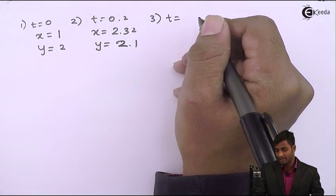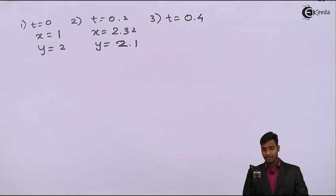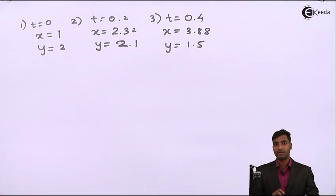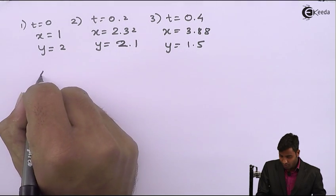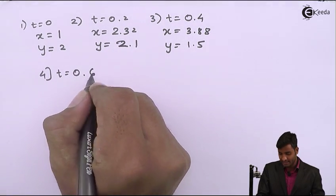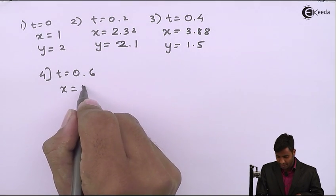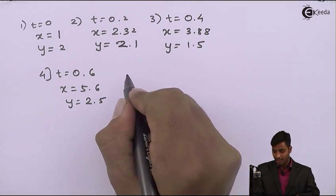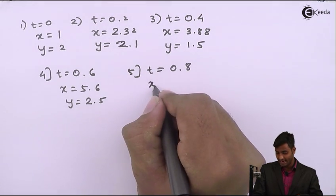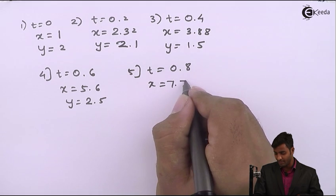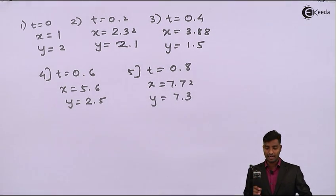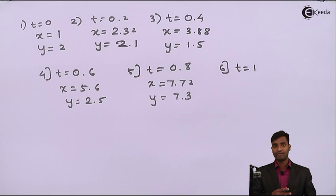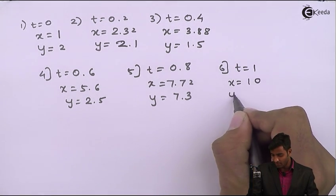For t = 0.4, substituting into Equation 1 gives x = 3.88 and y = 1.5. For t = 0.6, x = 5.6 and y = 2.5. For t = 0.8, x = 7.72 and y = 7.3. And finally, for t = 1, x = 10 and y = 8.